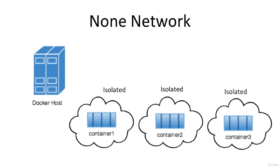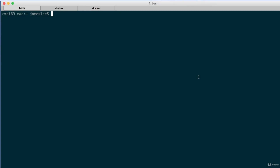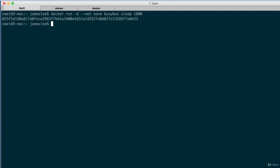Welcome back. In this lecture, we're going to talk about the none network. This network does not have any access to the outside world. The none network adds a container to a container-specific network stack, and that container lacks a network interface, so it's totally isolated — this kind of container is called a closed container. To create a closed container, we use the --net none option in the docker run command: docker run --net none busybox sleep 1000. This starts up a closed container in the none network from the busybox image; sleep 1000 keeps the container in running state.